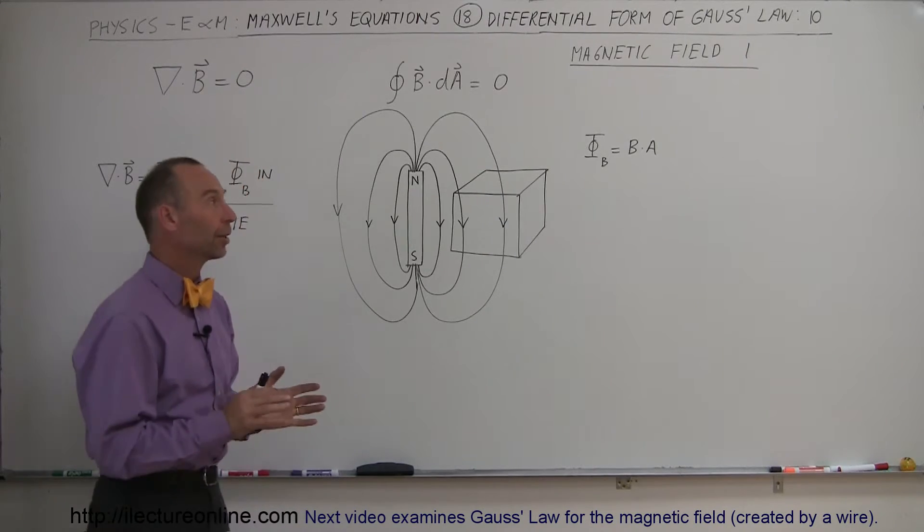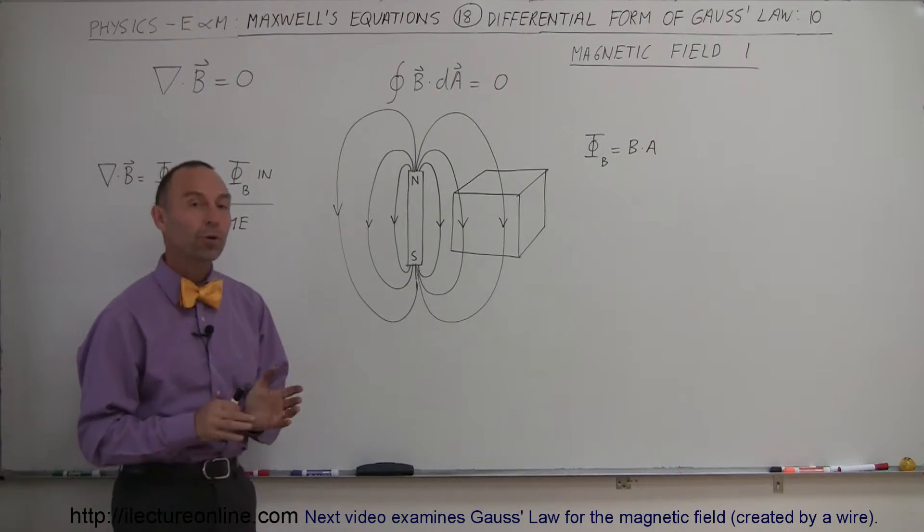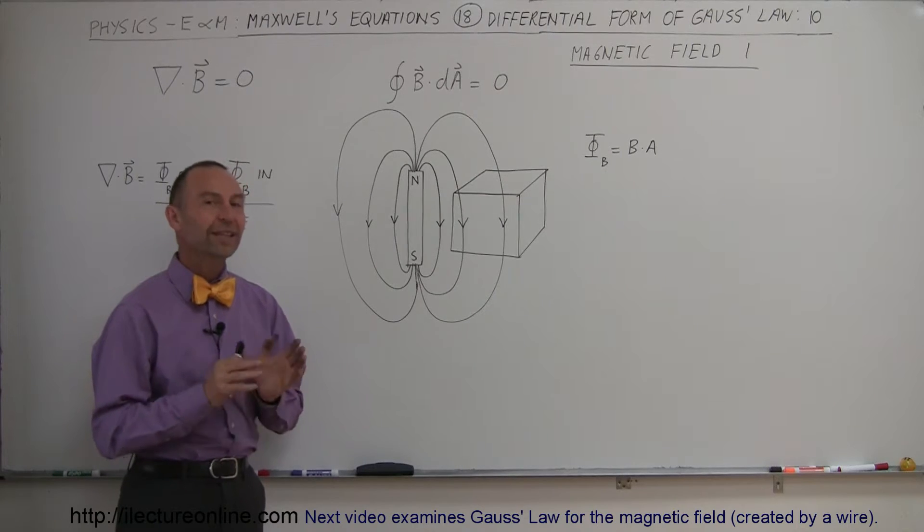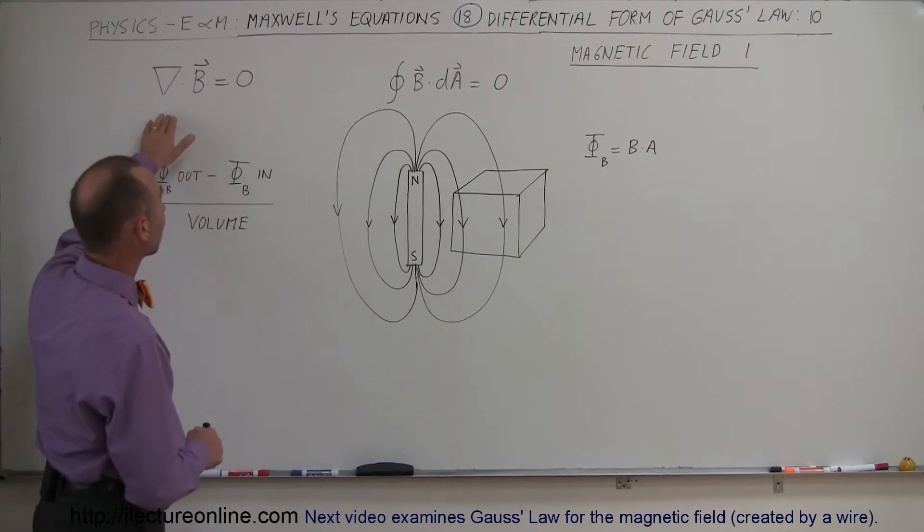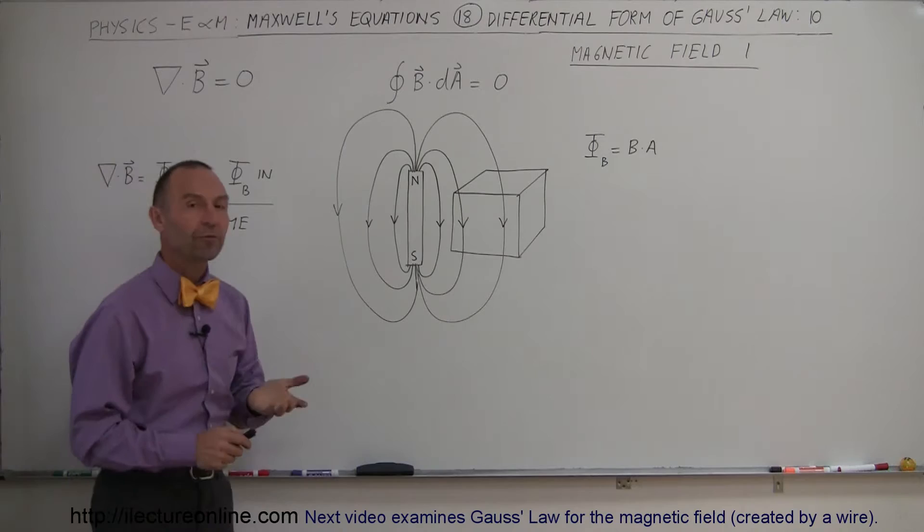Welcome to Electron Online, and now we're going to take a look at the second of the four of Maxwell's equations in differential form. There it is. It's also known as Gauss's Law for magnetism.